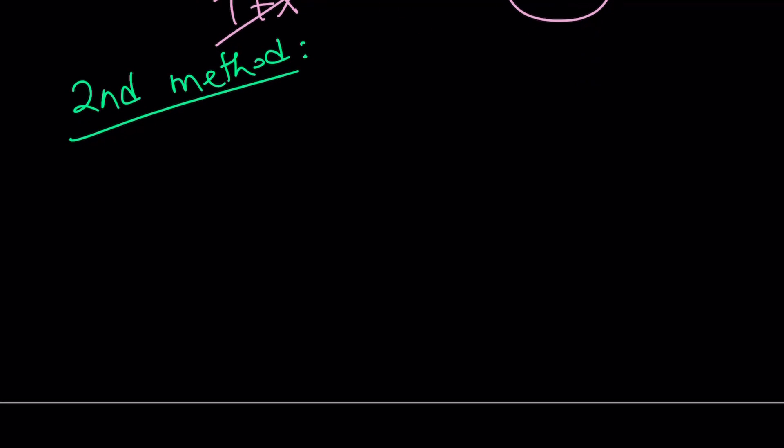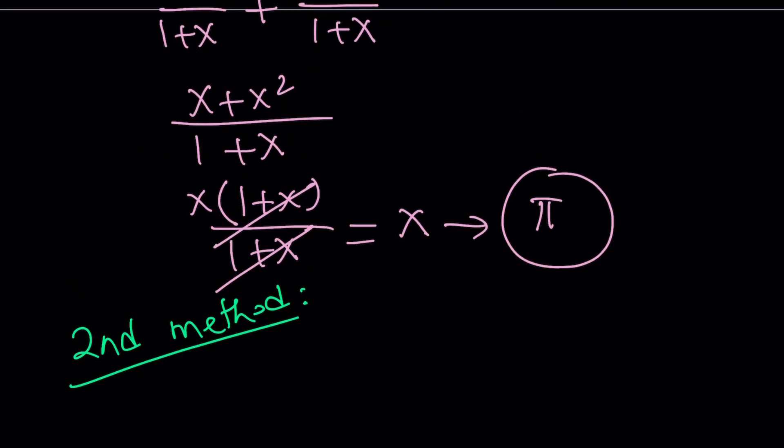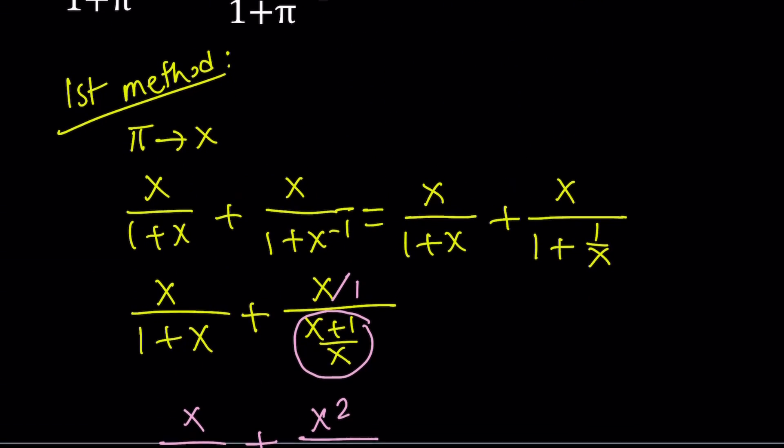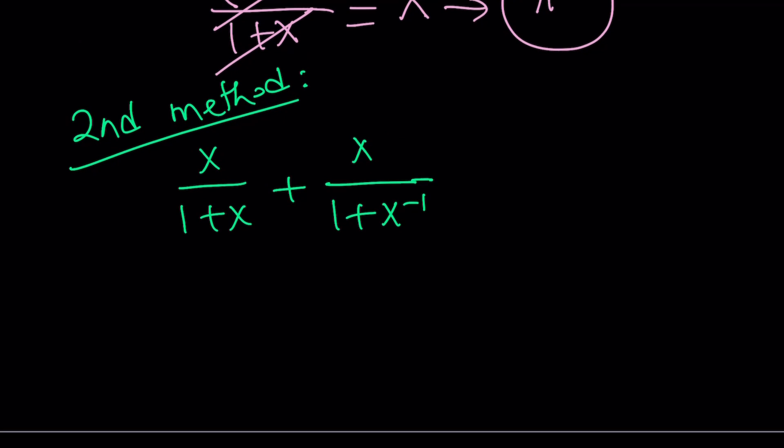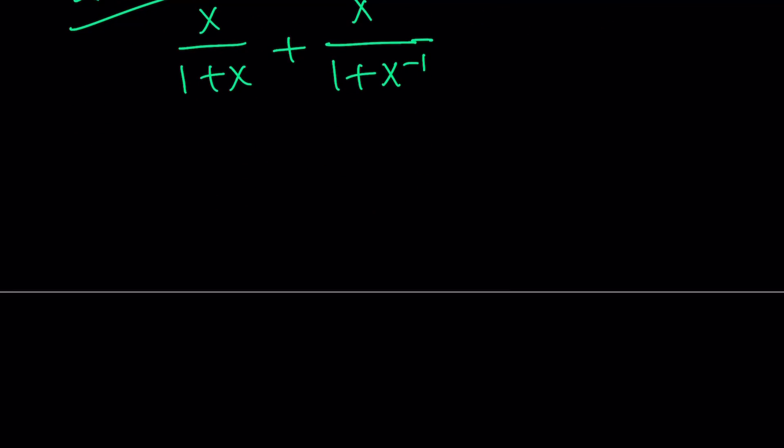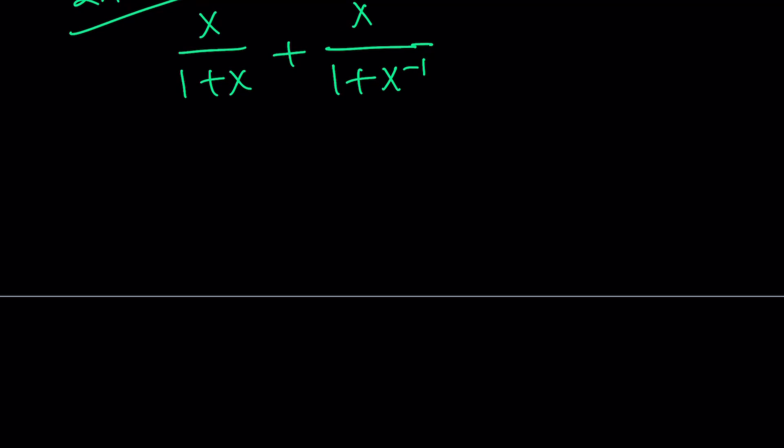All right, for our second method, again, I'm going to be using the substitution. So let's pick up where that is. So we have x over 1 plus x plus x over 1 plus x to the power of negative 1. This is also really cool because you can basically replace x with any number. And this is still going to be true because at the end, the answer is always x. And I'll tell you a little bit more about this later.